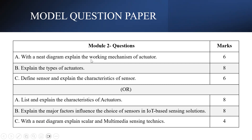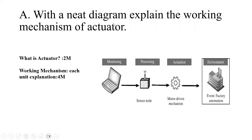I will give you a hint of the mark split-up for each question. For the first question — with a neat diagram, explain the working mechanism of an actuator — you can define what an actuator is for 2 marks, and then draw the diagram explaining how monitoring is done, how processing is done, what the sensor node is, and what the mechanism of actuation is. That block diagram with an application carries 4 marks, making a total of 6 marks.